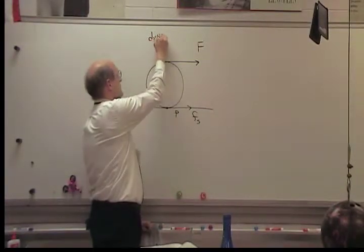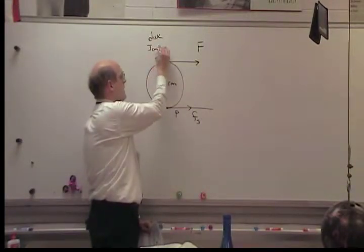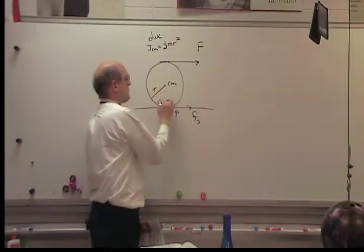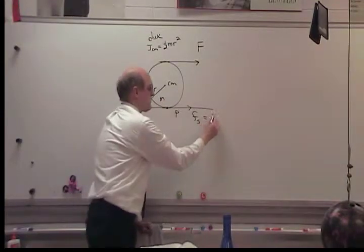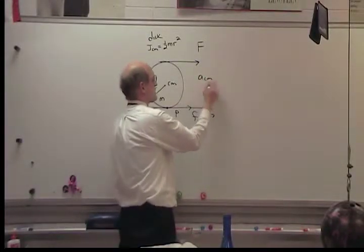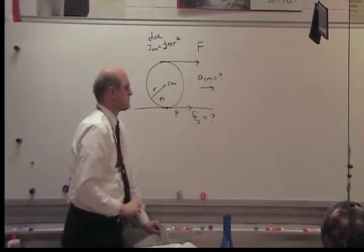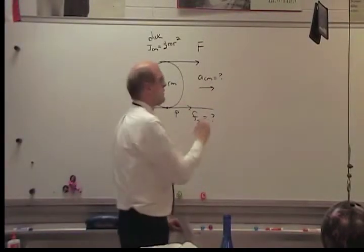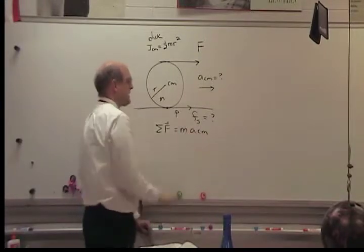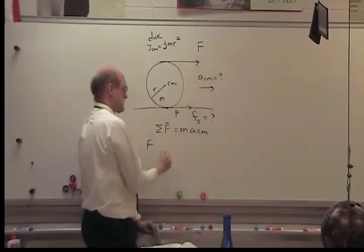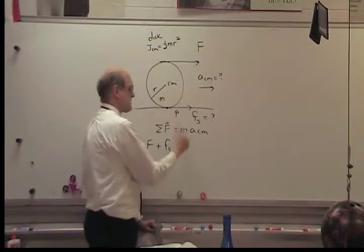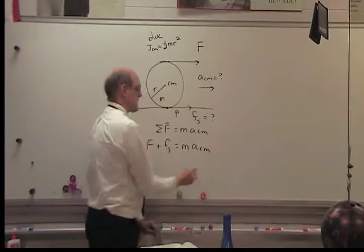This is a disk. We know that the moment of inertia about the center of mass is equal to one-half mR squared. We're looking for the force of static friction, and let's also look for the acceleration of the disk's center of mass. Starting with Newton's second law of translation, we have sigma F equals mA_cm. So we have this applied force plus the force of static friction, which I'm guessing is directed to the right, equal to the mass of the disk times the acceleration of the center of mass.